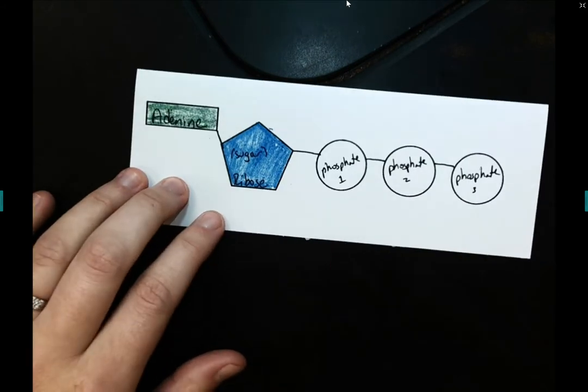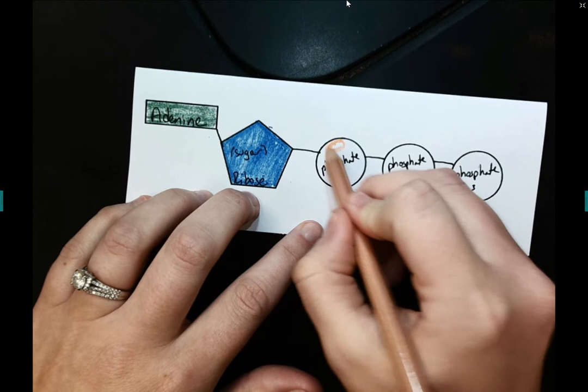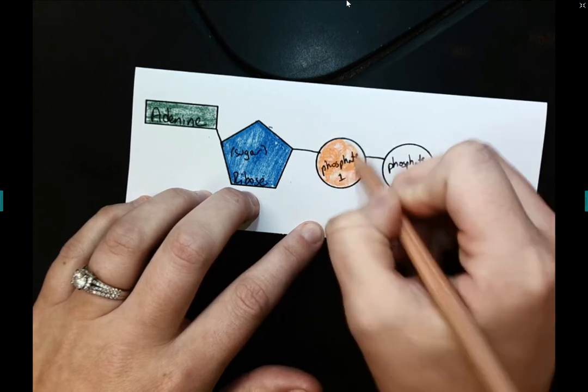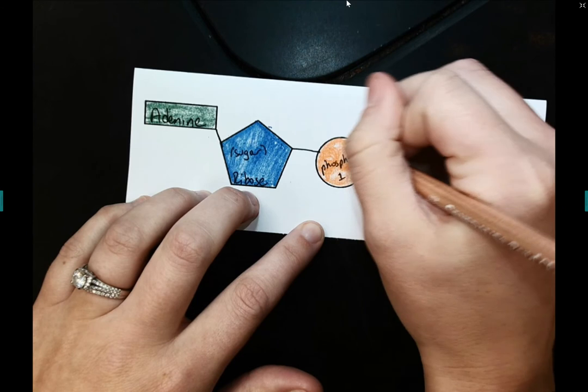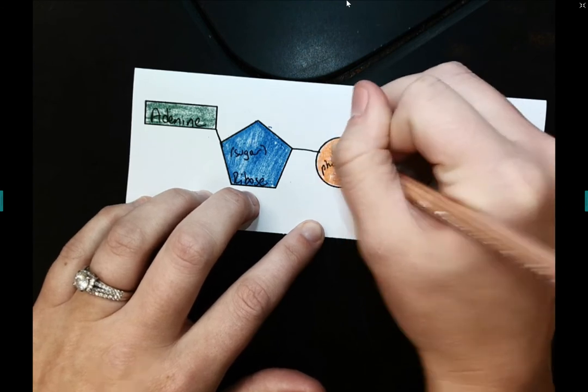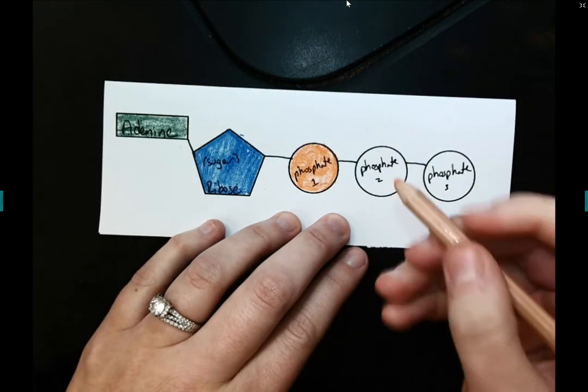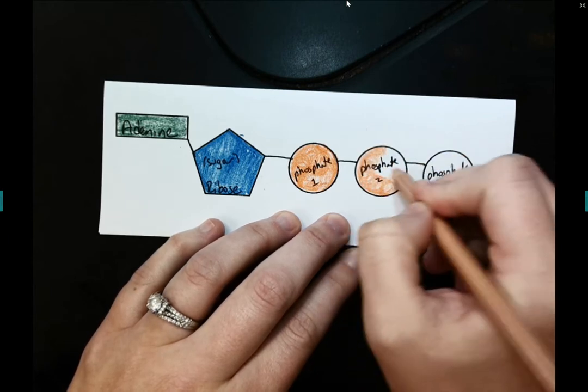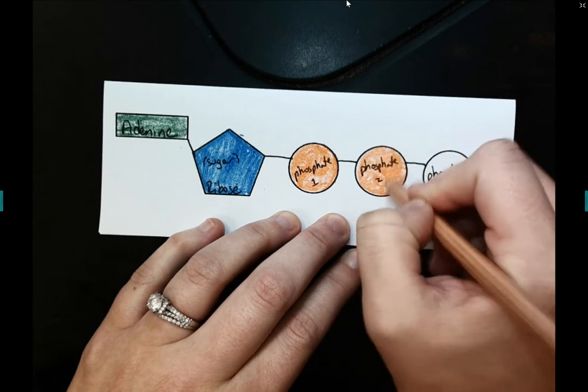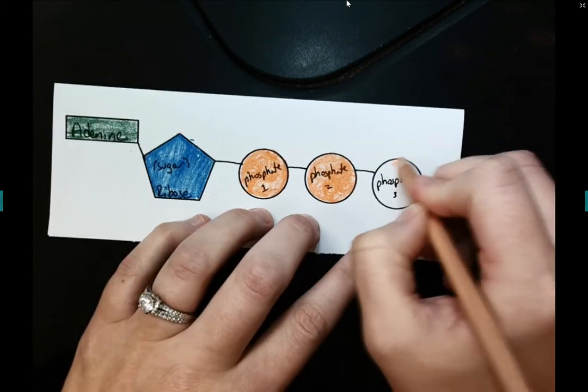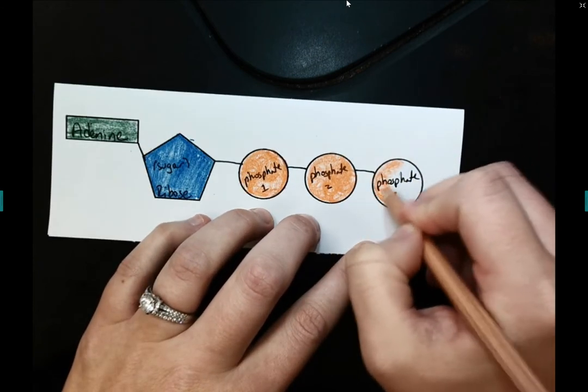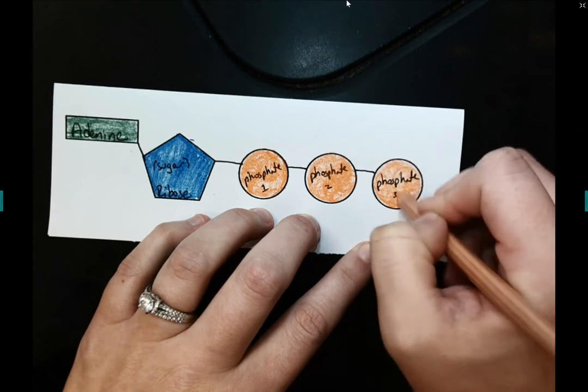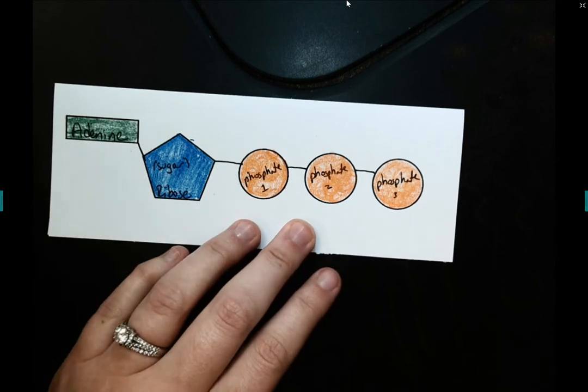And then I'm going to color my three phosphates orange. And I'm coloring these in, one, so that it kind of stands out of my notebook. But number two, so that I recognize that these are three different parts of the ATP molecule. Ribose is a sugar, adenine is a nucleic acid, and then of course we have our three phosphates.